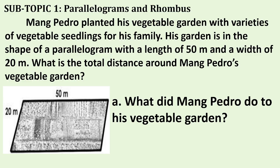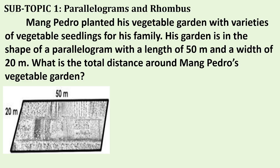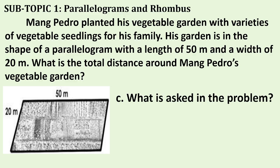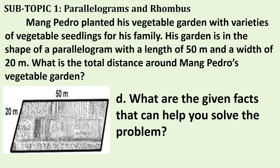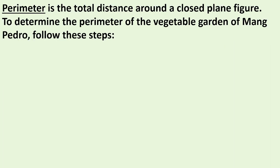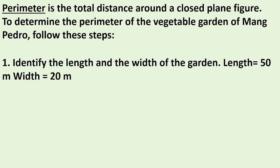What did Mang Pedro do to his vegetable garden? Why did he plant his garden with varieties of vegetable seedlings? What is asked in the problem? What are the given facts that can help you solve the problem? Identify the length and width of the garden: length equals 50 meters, width equals 20 meters.